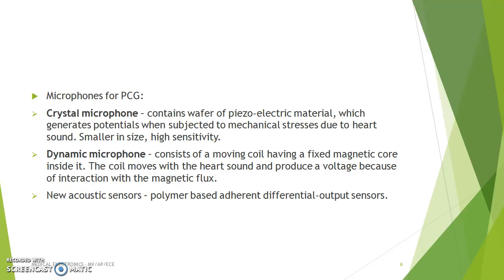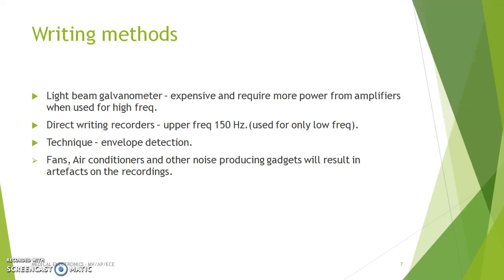We also use acoustic sensors which are polymer-based, as well as some output sensors. In PCG recording, writing methods include light beam galvanometers and direct writing recorders, whose upper frequency range is 150 hertz. Envelope detection technique is also used. Fans, air conditioners, and other noise-producing gadgets can result in artifacts on the recordings.